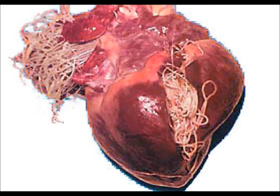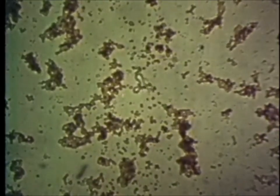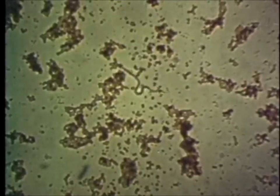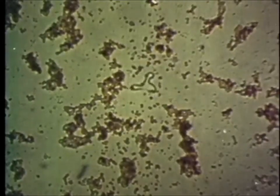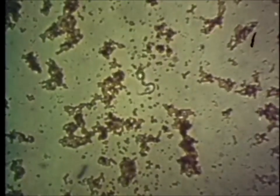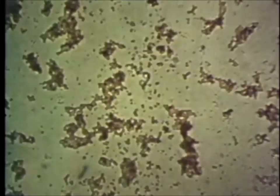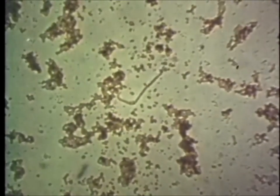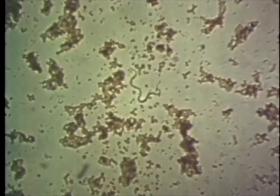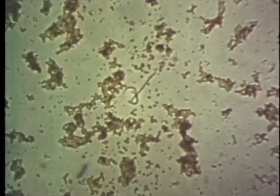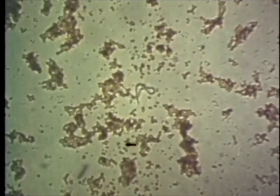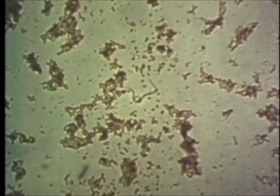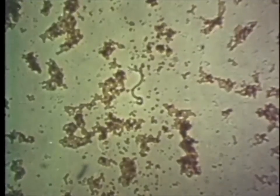Here you can see the microscopic microfilaria — that's the heartworm in its larval stage — wriggling through the circulating blood against red blood cells. This is ingested by mosquitoes, develops further, and is then injected into another canine host, and then the life cycle continues.